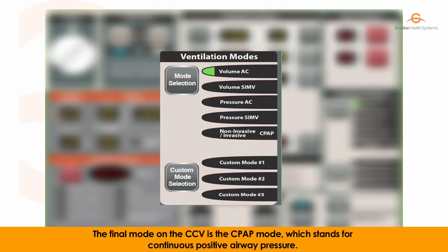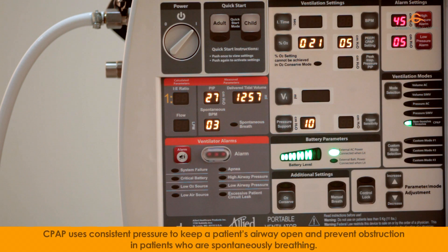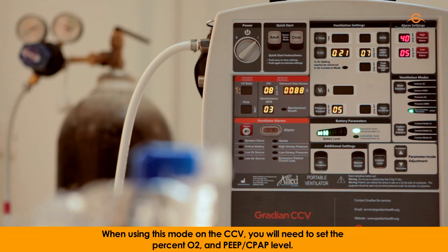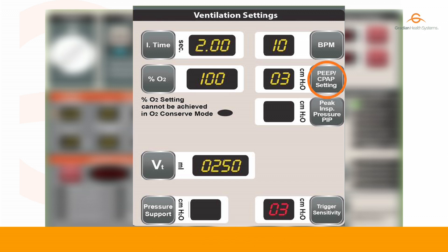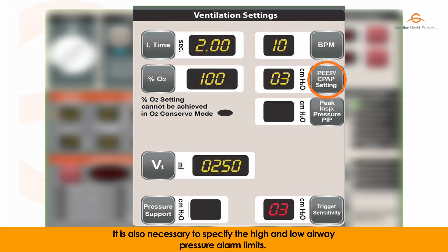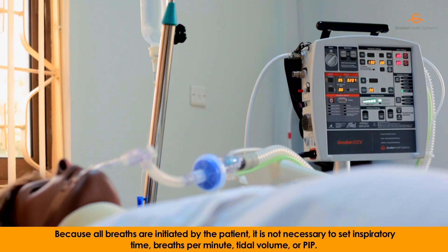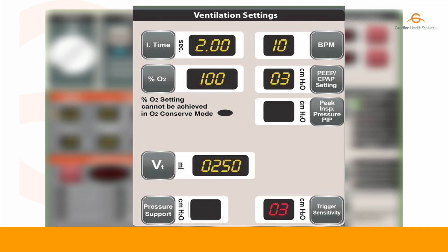The final mode on the CCV is CPAP mode, which stands for Continuous Positive Airway Pressure. This can be delivered both invasively and non-invasively on the CCV. CPAP uses consistent pressure to keep a patient's airway open and prevent obstruction in patients who are spontaneously breathing. When using this mode, you will need to set the FiO2 and PEEP/CPAP level. It is also necessary to specify the high and low airway pressure alarm limits. Because all breaths are initiated by the patient, it is not necessary to set inspiratory time, breaths per minute, or tidal volume.